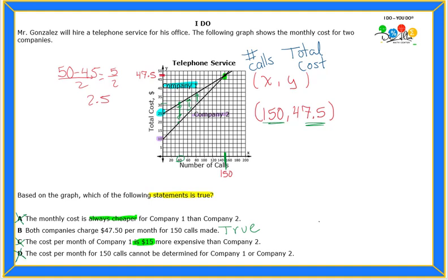So this is not true. We could actually figure it out—the total cost for 150 calls. So now I can see that yes, letter B should be my answer. Very good.